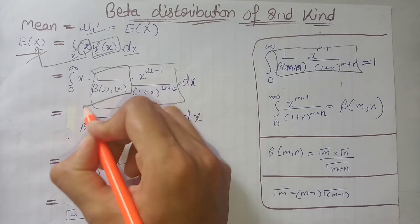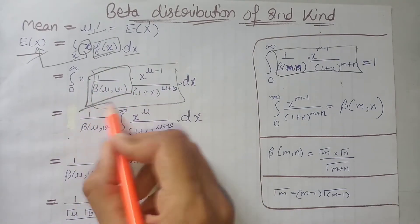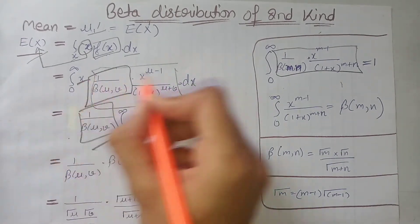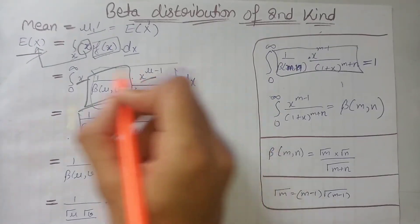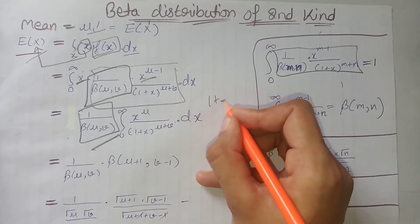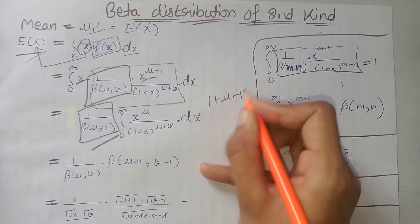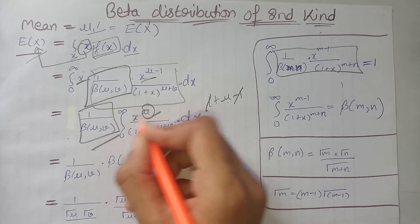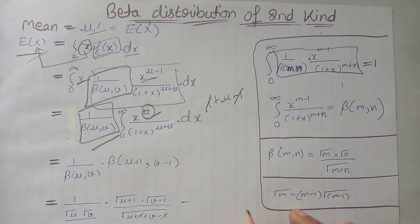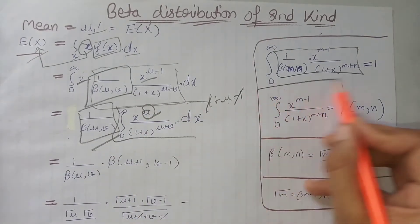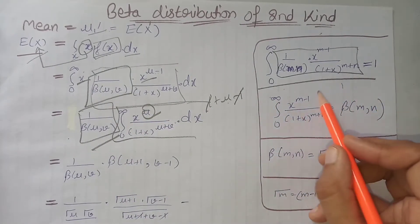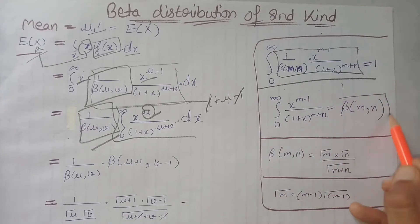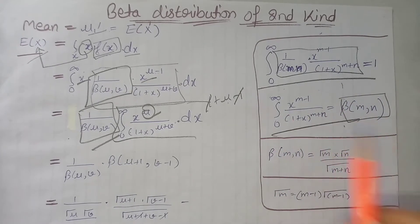We write the constant term outside the integration. Since the bases are the same, we can add the powers: 1 plus (u minus 1) gives us x raised to the power u. From here we can recognize the definition of the beta function.